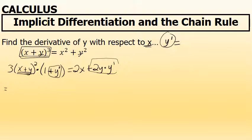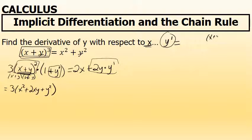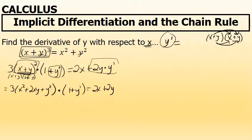I'll begin expanding the left side by computing x plus y to the second power. x plus y times x plus y equals x squared plus 2xy plus y squared — arrived at by distributing x and distributing y. I'm going to multiply that by 1 plus y prime, and that equals 2x on the right, which stays unchanged: 2x plus 2y times y prime.